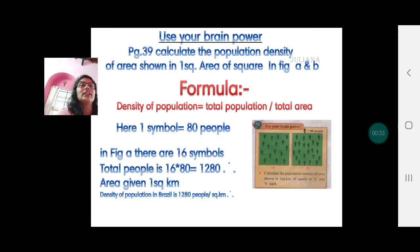Now you have this use your brain power on page 39. Calculate the population density of area shown in one square kilometer area. That means the area is already given as one square kilometer. There are two figures A and B. The formula to calculate density is density of population equals total population divided by total area. So area is 1, so our calculation will be much simpler.